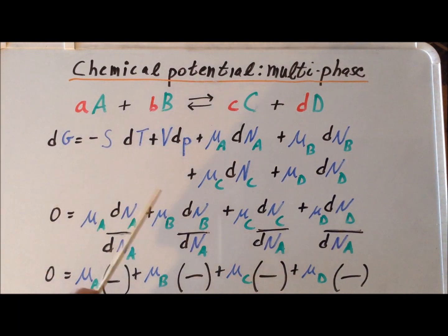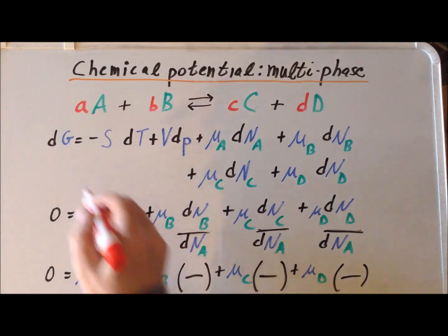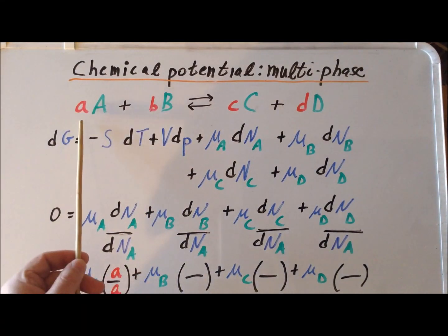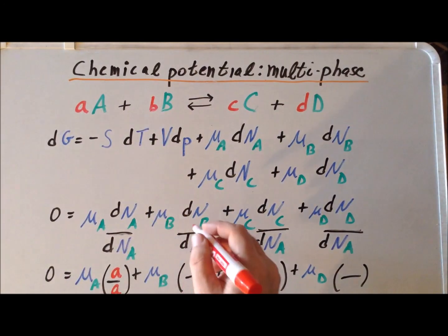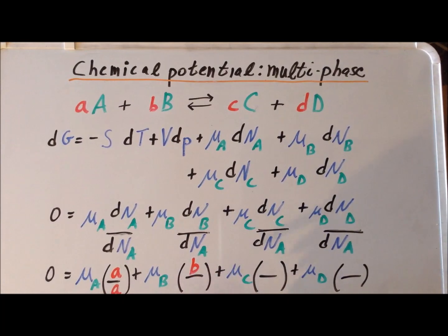To be more specific, the change in A divided by the change in A is going to be a divided by a. The number of moles of A changes by a, so we have a divided by a. Similarly for B, for every a moles of A that changes, we get a change of small b moles of B. So the change dn_B divided by dn_A is going to be little b divided by little a.